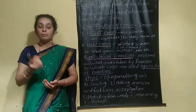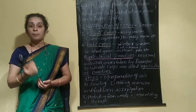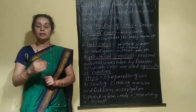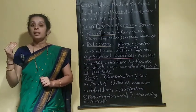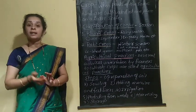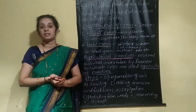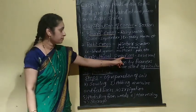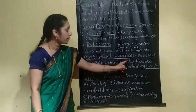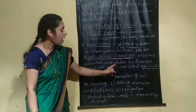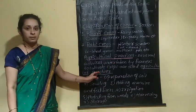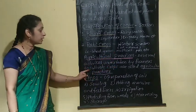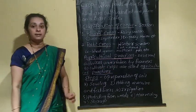Farmers follow some activities in the agricultural field to cultivate crops. Several activities undertaken by farmers to cultivate crops are called agricultural practices.